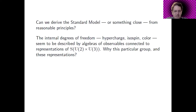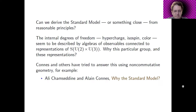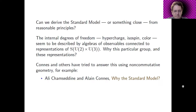The internal degrees of freedom in the standard model — the hypercharge, isospin, and color — are described by algebras of observables connected to representations of the standard model gauge group, which I like to call S(U(2)×U(3)). That's the five-by-five unitary matrices with determinant one in block form of a two-by-two block and a three-by-three block. The big question becomes: why should this particular group be favored, and the particular representations that we see? There's been quite a bit of work on this, and in particular Alan Connes and his collaborators have tried to answer it using non-commutative geometry.